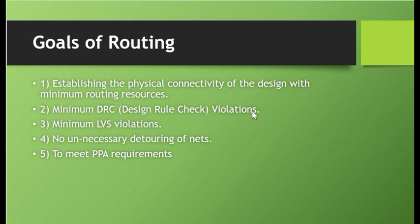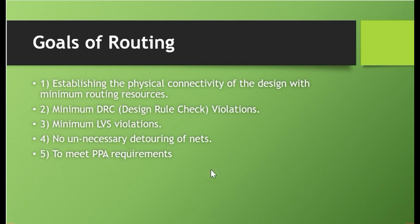And there should not be any unnecessary detouring of nets, because if there are unnecessary detouring of nets, it can create timing problems, it can lead to congestion, and it can increase the routing resources which can increase the cost. So there should not be any unnecessary detouring of nets. And while routing the design, PPA requirements should always be kept in mind. PPA stands for power, performance, and area — timing and area requirements should always be kept in mind while routing.